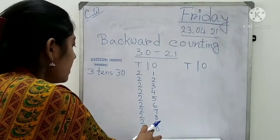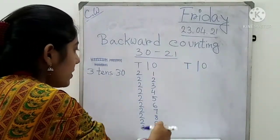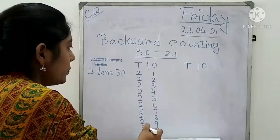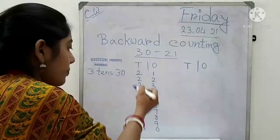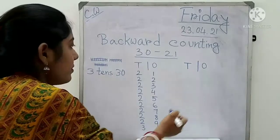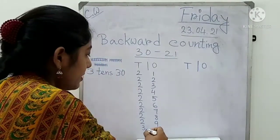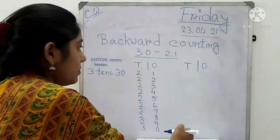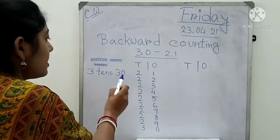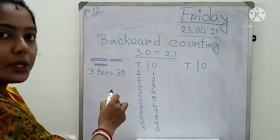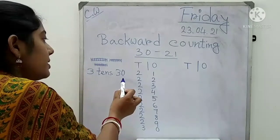So now we will write the backward numbers from 30 to 21. From down to the up. From down to the up we will write the numbers. From 30 we will write here. So the first number will be 30 in backward counting. 30 means 3 tens. 3 tens means 30, as I have told you in the last class.